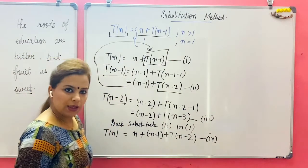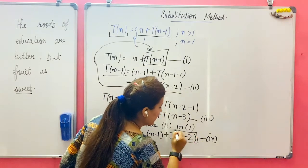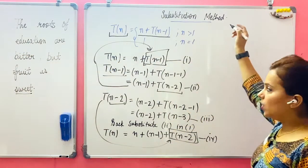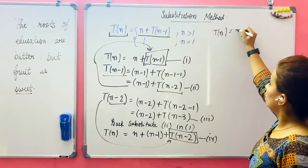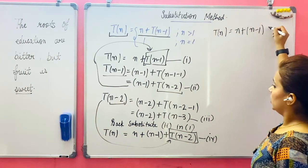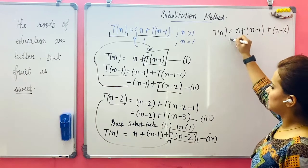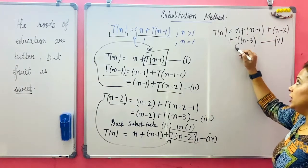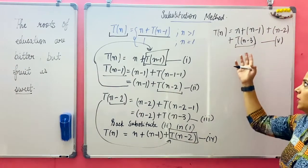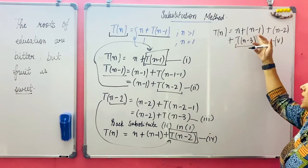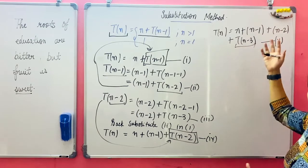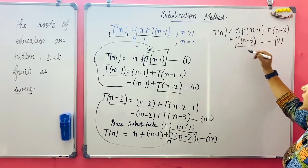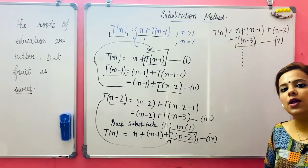You already calculated the value of T(n-2), so instead of T(n-2), put that value. When I do that, T(n) becomes: T(n) = n + (n-1) + (n-2) + T(n-3). Similarly, if I replace T(n-3), it will be n + (n-1) + (n-2) + (n-3) + T(n-4), and so on. This continues, and I am able to find the relation.